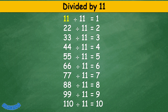Divided by 11: 11 divided by 11 equals 1, 22 divided by 11 equals 2, 33 divided by 11 equals 3, 44 divided by 11 equals 4, 55 divided by 11 equals 5, 66 divided by 11 equals 6, 77 divided by 11 equals 7, 88 divided by 11 equals 8, 99 divided by 11 equals 9, 110 divided by 11 equals 10.